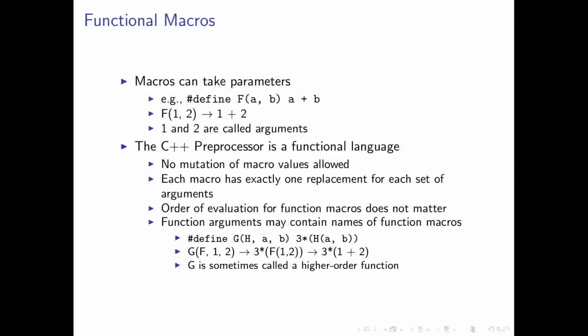And as a consequence, it doesn't matter to the preprocessor what the actual order of evaluation is for function arguments. And another particularly interesting thing you can do here is you can create what are called higher order functions. So, let's look at this function g that we've defined, for example. Here we have arguments a and b that, of course, get replaced as normal. But we also have an argument h, which is a macro name.